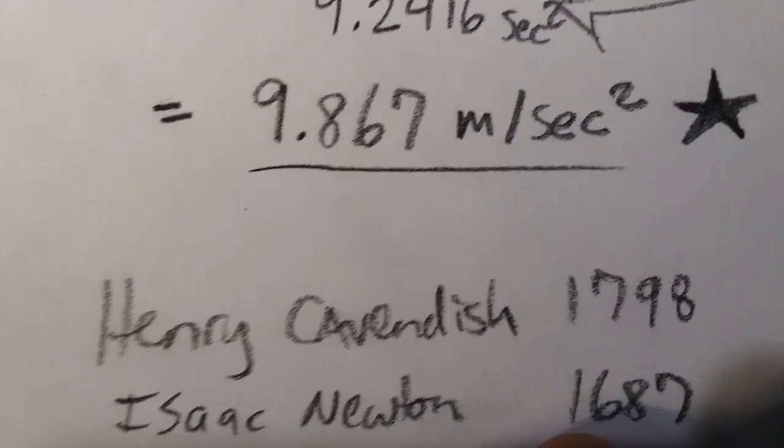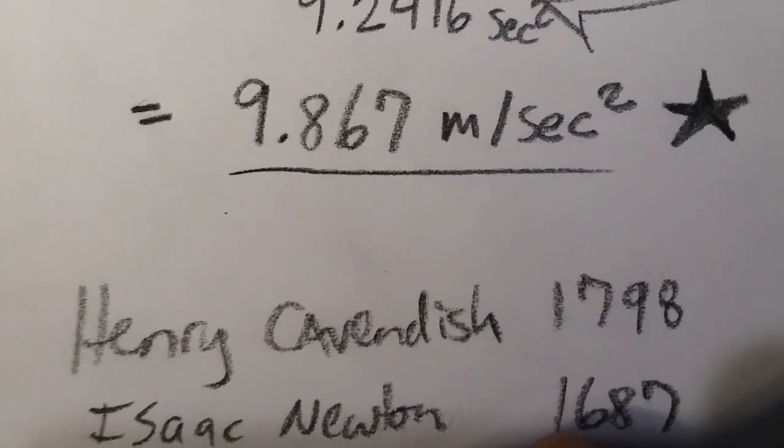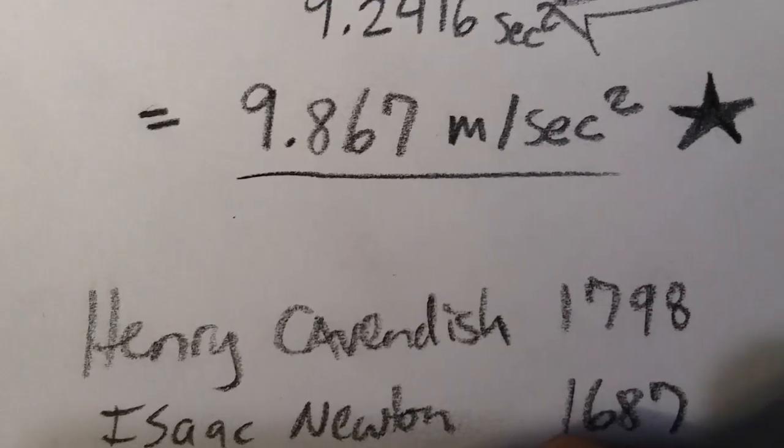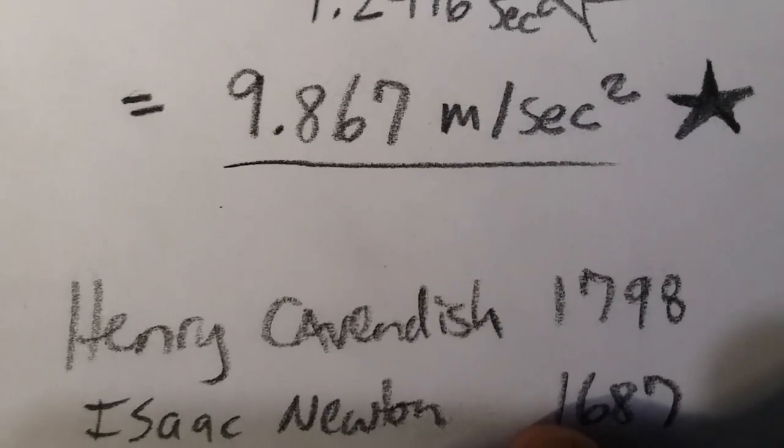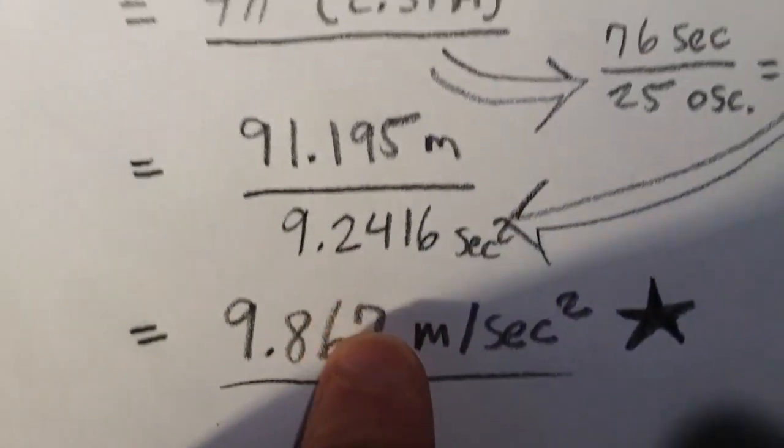Of course, Isaac Newton, in his famous works of 1687, Principia, alludes to the gravitational constant as well.